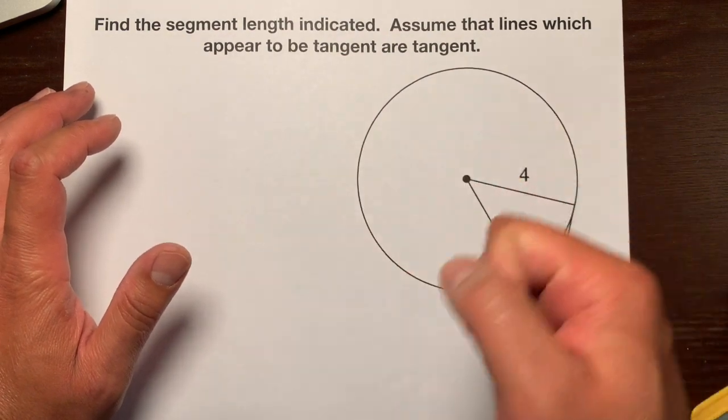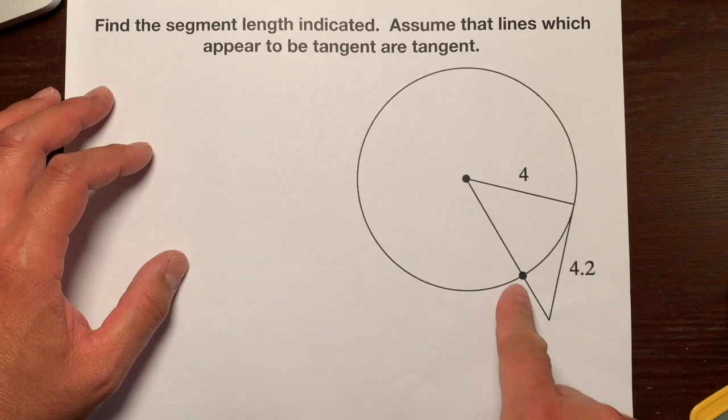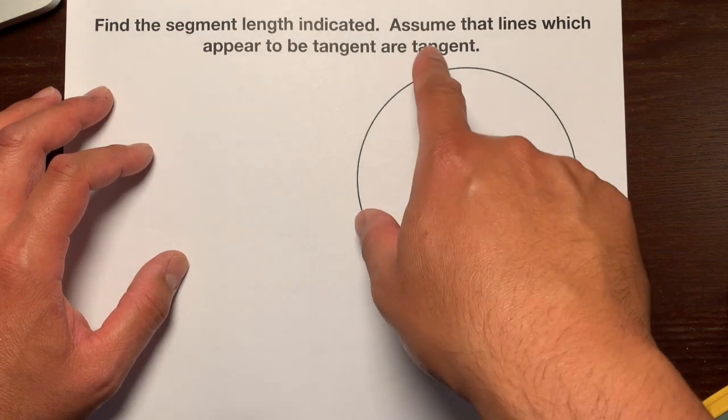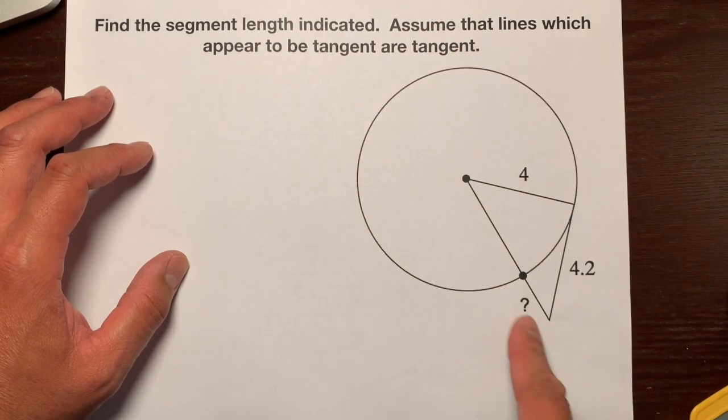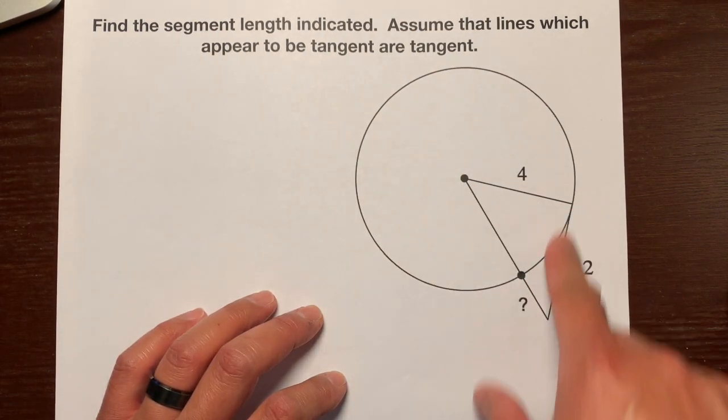But just watch it again and again and again. So find the segment length indicated. So this line right here, assume that lines which appear to be tangent are tangent. So this line right here, it's telling us that this line is tangent.